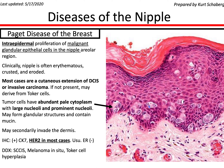Your biggest differential is squamous cell carcinoma in situ, toker cell hyperplasia, and melanoma in situ. If you're unsure, you can do IHC. The big IHC in my opinion is HER2 — as Dr. Schabert bolds here, HER2 is positive in most cases. CK7 will be positive, usually ER negative. Squamous cell carcinoma in situ won't be HER2 positive. Toker cell hyperplasia can be CK7 positive but not HER2 positive. For melanoma in situ, you can always get a SOX10 or S100.